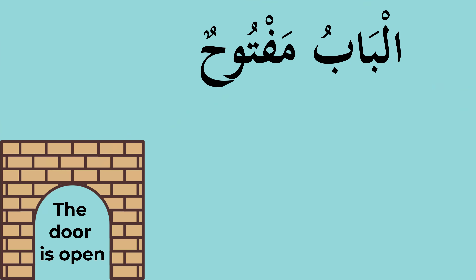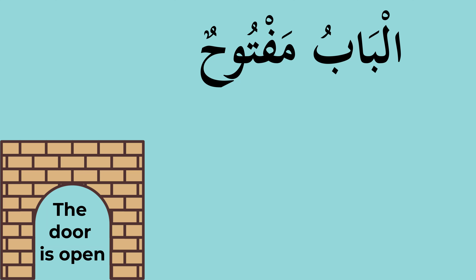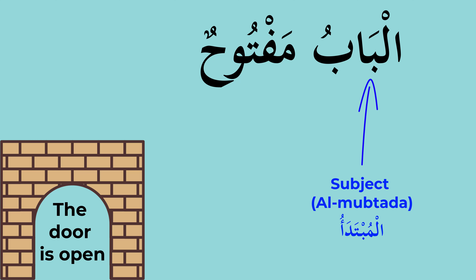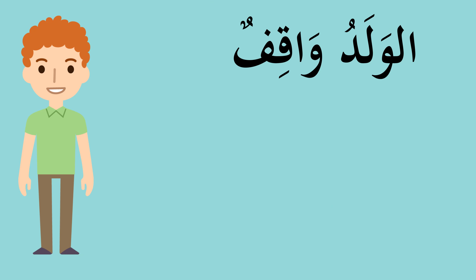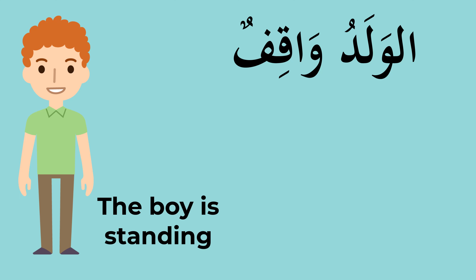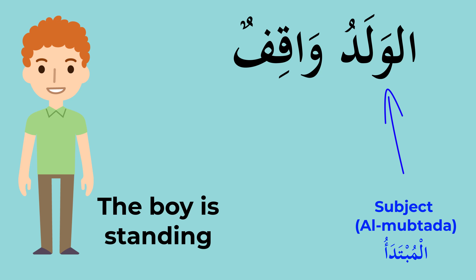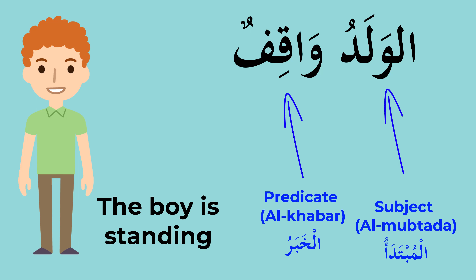Next sentence: al-babu maftohon — 'The door is open.' Al-babu is the Mubtada — 'the door,' which is definite. Maftohon is the Khabar — 'it is open.' Another example: al-waladu waakifun — 'The boy is standing.' The sentence begins with a noun, so it is a nominal sentence, a Jumla Ismiya. Al-waladu is the Mubtada, and waakifun is the Khabar.